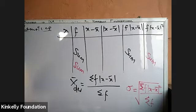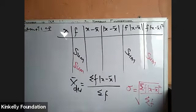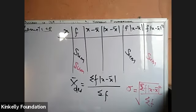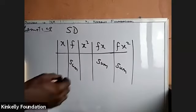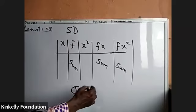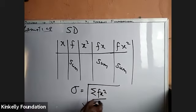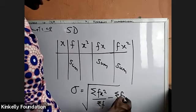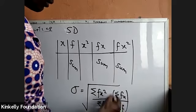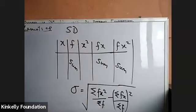The red formula gives us the standard deviation, while the black formula gives us the mean deviation. There are several formulas you can use for standard deviation, including the square root of summation of f·x² all over summation of f, minus the quantity (summation of f·x all over summation of f) squared.